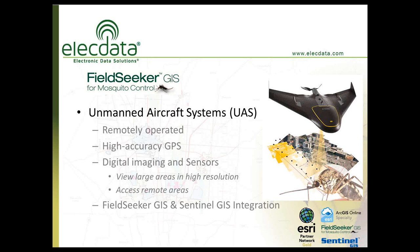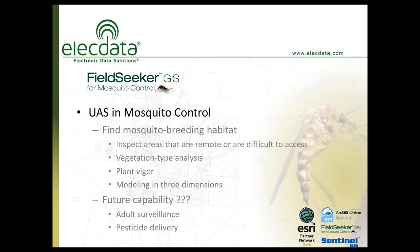UAS can be used to analyze large tracts of perhaps private land that need to be assessed for mosquito breeding sources. The product deliverables are images that can be processed and classified. Those deliverables are compatible with our Sentinel GIS and Field Seeker GIS software applications, so they integrate directly with our mosquito control software solutions. The primary purpose will be to find mosquito breeding habitat, and UAS may be used to visually inspect areas that are remote or difficult to access.